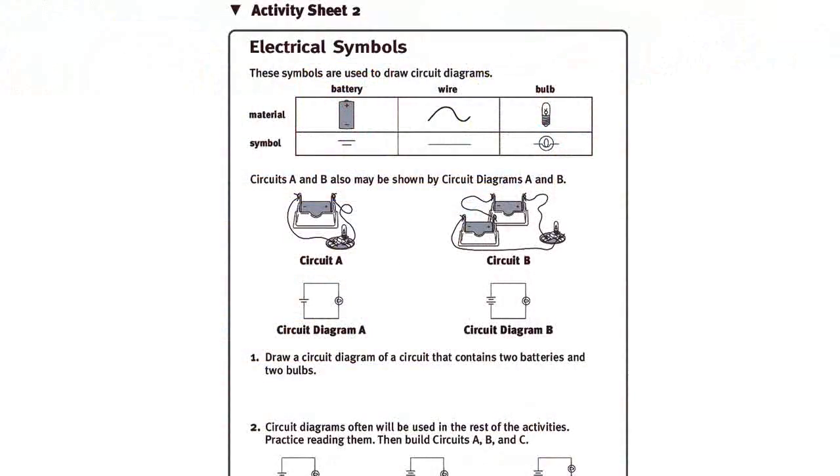To prepare for the activity, make a copy of Activity Sheet 2 for each student. Cut and strip additional pieces of wire so that each team will have four 15 cm pieces.